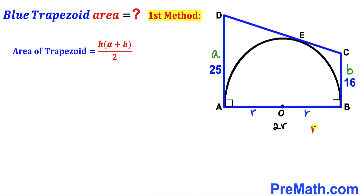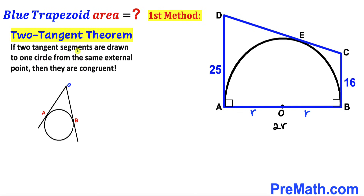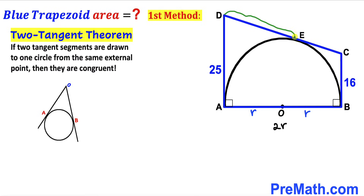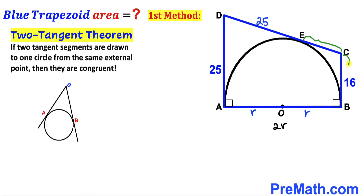Now our task is to find the value of radius r. Let's recall the two tangents theorem: if two tangent segments are drawn to a circle from the same external point, they are congruent. Applying this to our problem, segment DE must equal base AD, which is 25 units, and segment EC must equal base BC, which is 16 units.